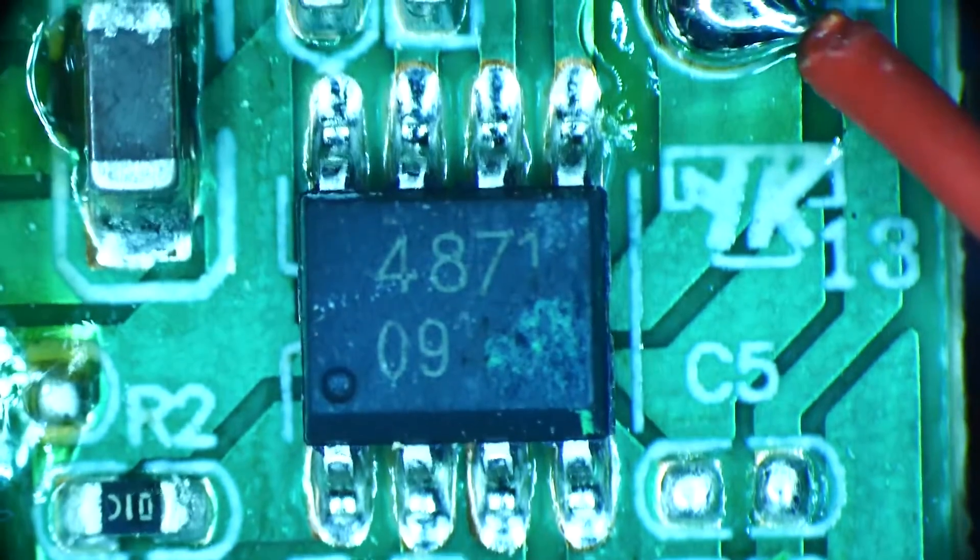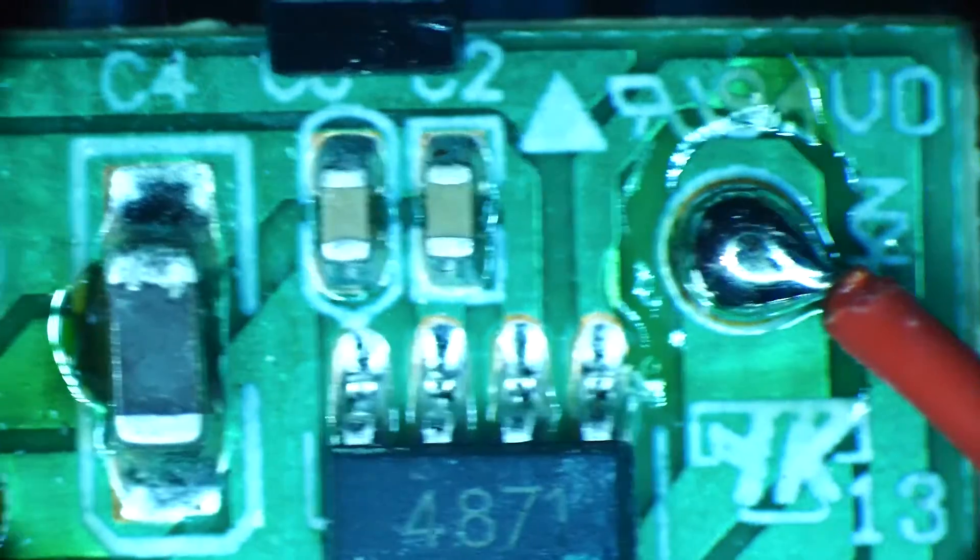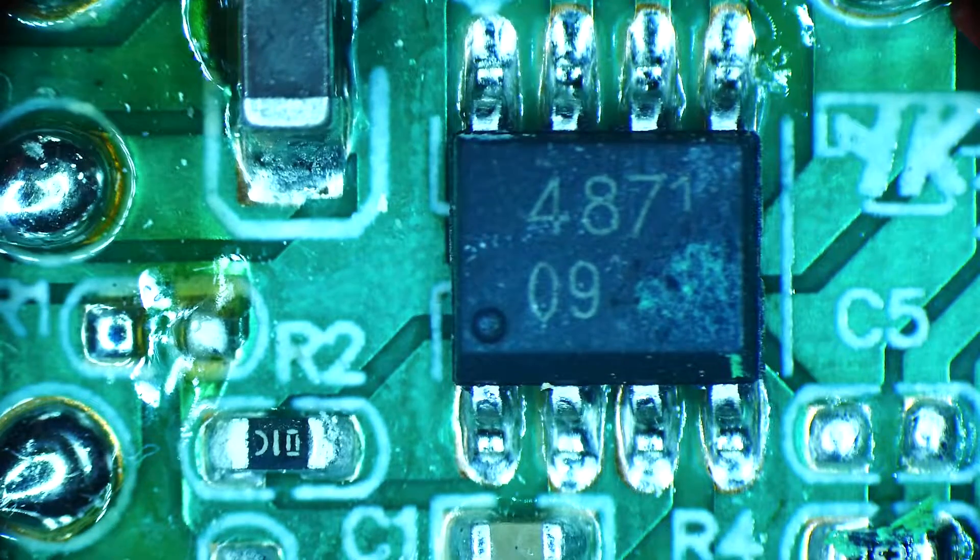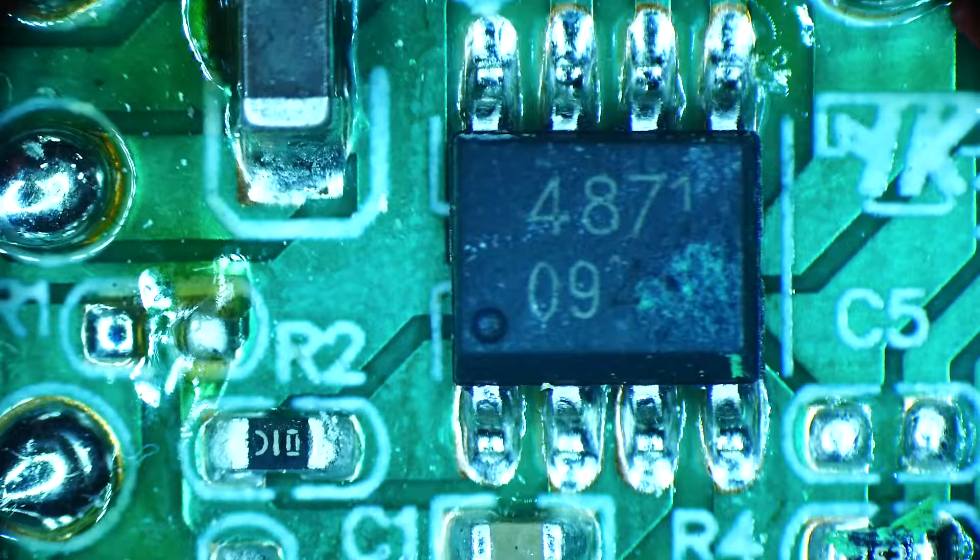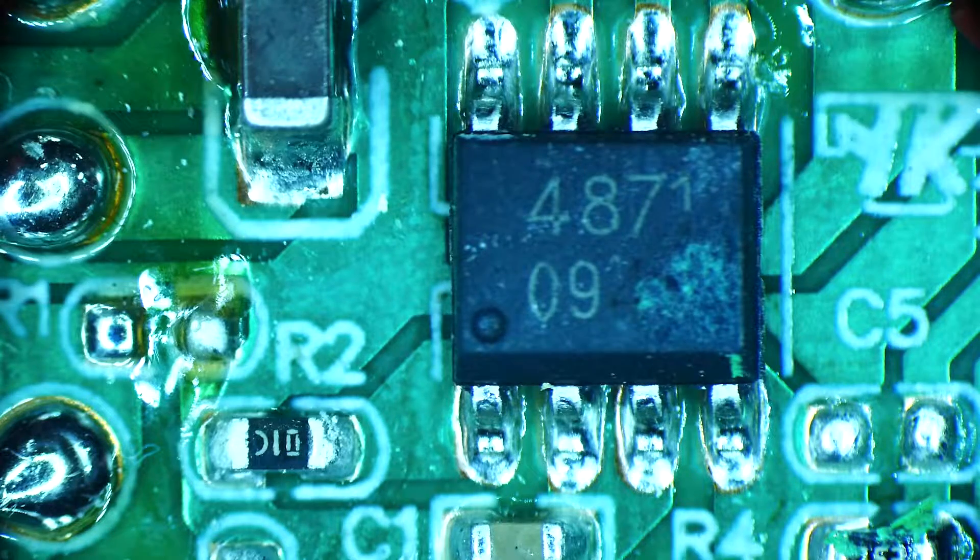It looks like the PC board is labeled so we'll know what the signals do, and it is a Dell PC board, at least it's marked Dell. So the chip is a 4871, which is interesting. I hadn't heard of that chip before.